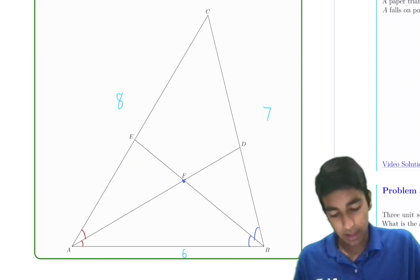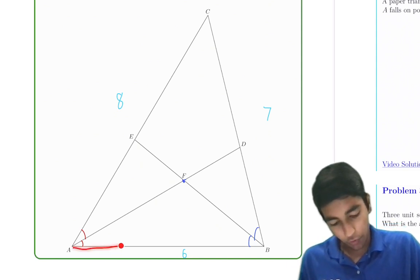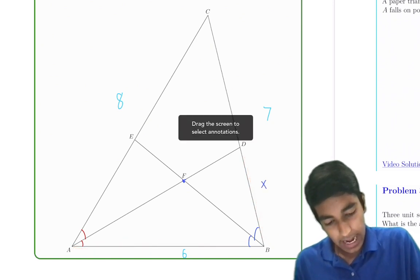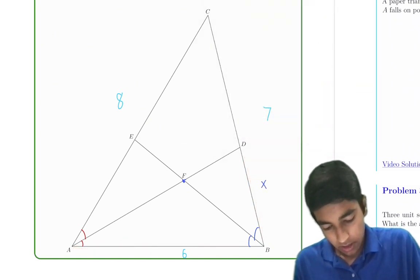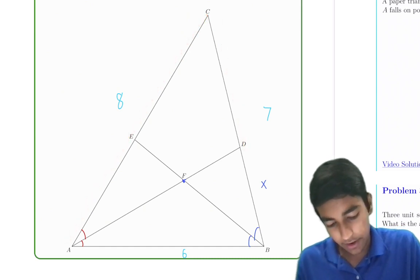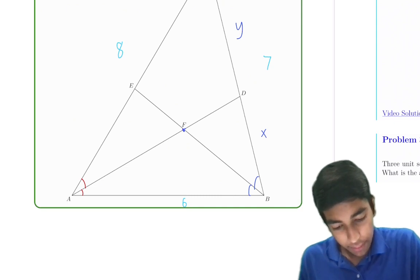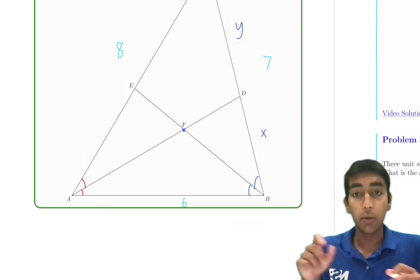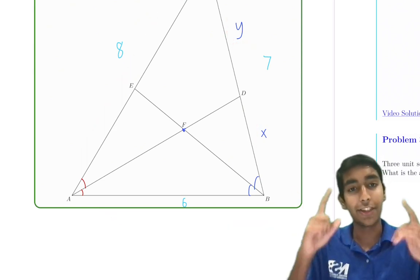What does angle bisector theorem say? It says that 6 over, let's call that X, equals 8 over Y. So we have that the ratio of X to Y is 6 to 8, because 8 over Y equals 6 over X by the angle bisector theorem.